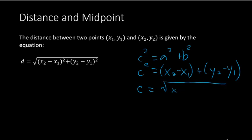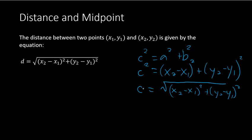The length of side a is the difference between the x values, and b is the difference of the y values. Then c — the hypotenuse — is the distance. Taking the square root of both sides gives us the distance formula with x2 minus x1 squared and y2 minus y1 squared all under the radical. We replace c with d, and that's where the formula comes from.